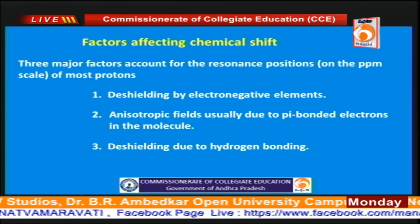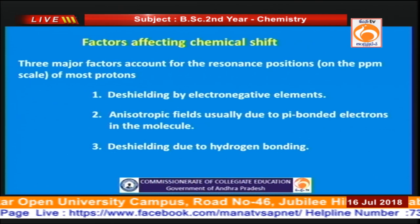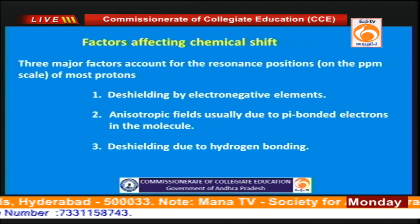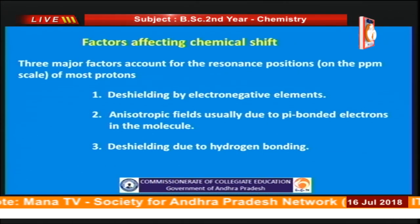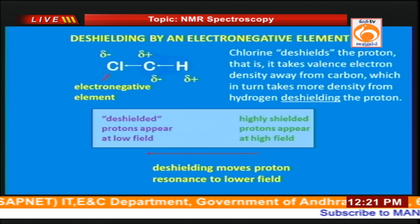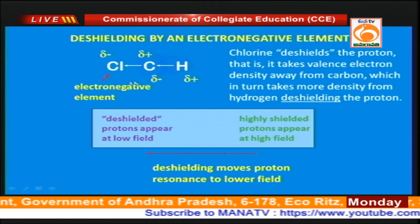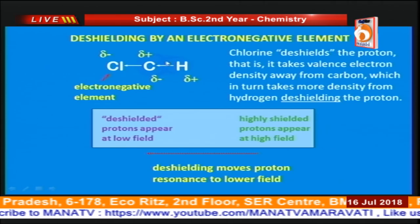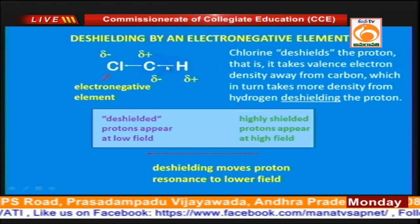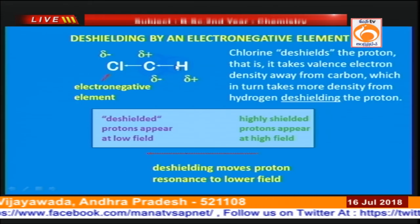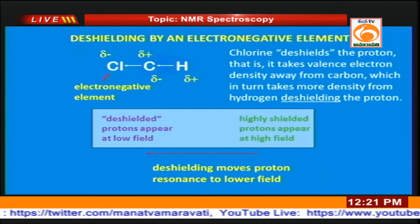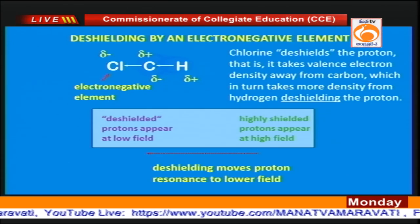There are three important factors that affect chemical shift. One is deshielding offered by electronegative elements. Second is an anisotropic effect, generally observed in aromatic systems and systems having π electrons. Third is deshielding due to hydrogen bonding. Whenever an electronegative element is attached to the carbon atom containing the proton, the electron density surrounding the proton decreases. Whenever electron density decreases, the proton is deshielded — the field experienced by the proton increases, meaning the more the deshielding, the greater the δ value.